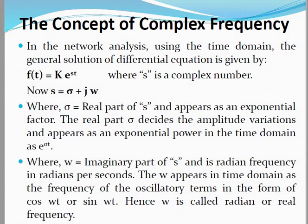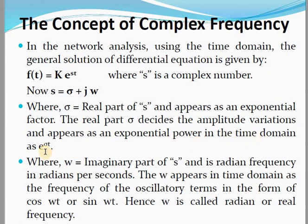What is the meaning of this s? Technically, s is given by σ + jω. When we put s = σ + jω, it becomes e^(σt + jωt). Since e^(a+b) = e^a · e^b, we can write it as k·e^(σt) multiplied by e^(jωt). The real part σ is the real part of s and appears as an exponential factor e^(σt). The real part σ decides the amplitude variation in the time domain.